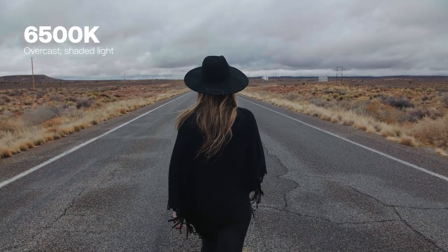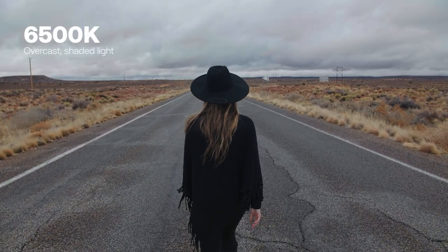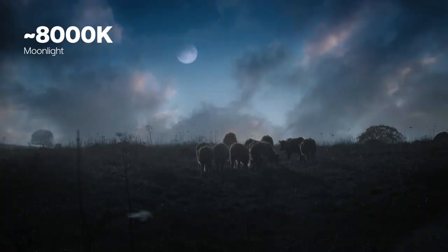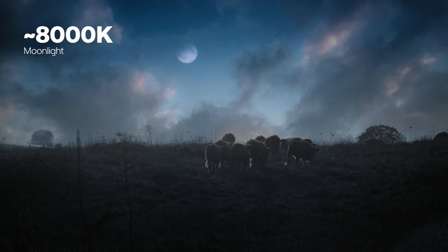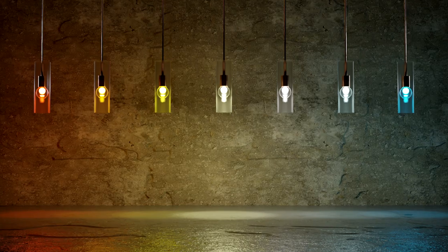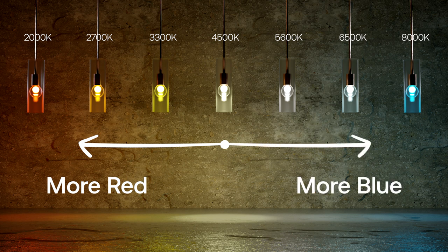Cloudy overcast days are around 6,500 Kelvin. Anything over 8,000 Kelvin is seen as cold and blue, and can often be associated with moonlight. The easiest thing to remember is that the lower the value, the warmer the color; the higher the value, the bluer the color.